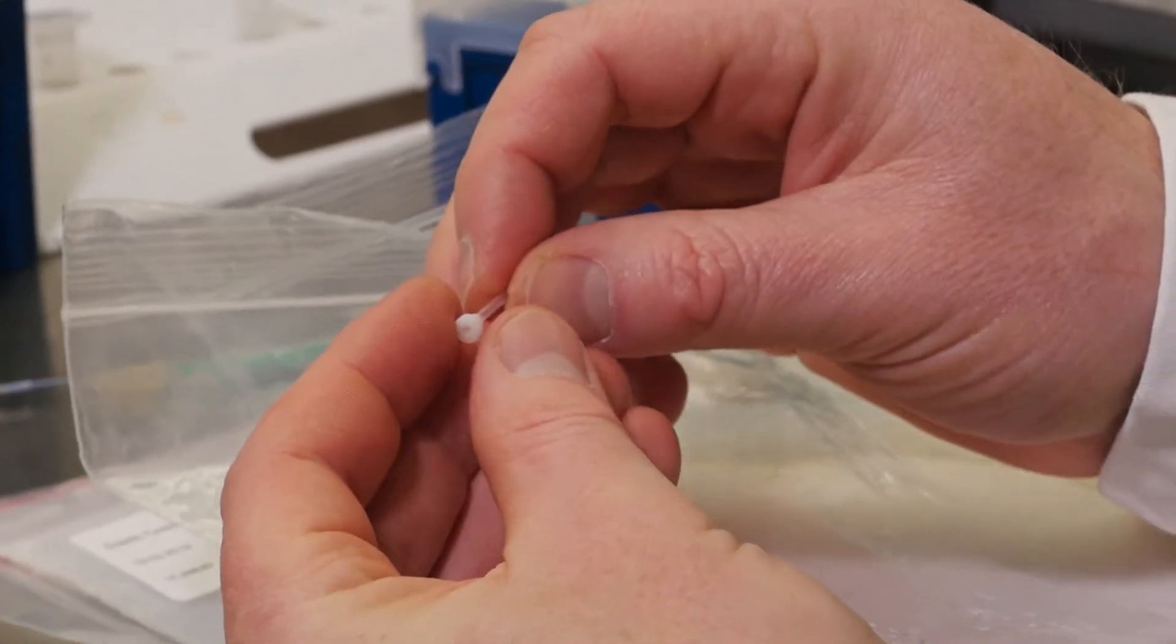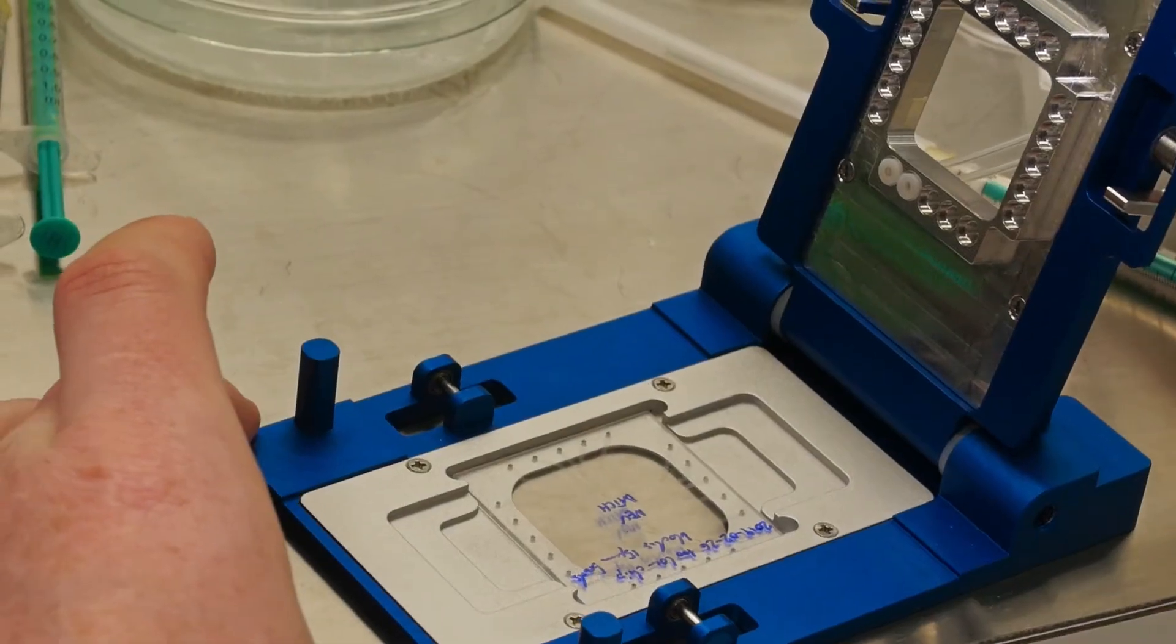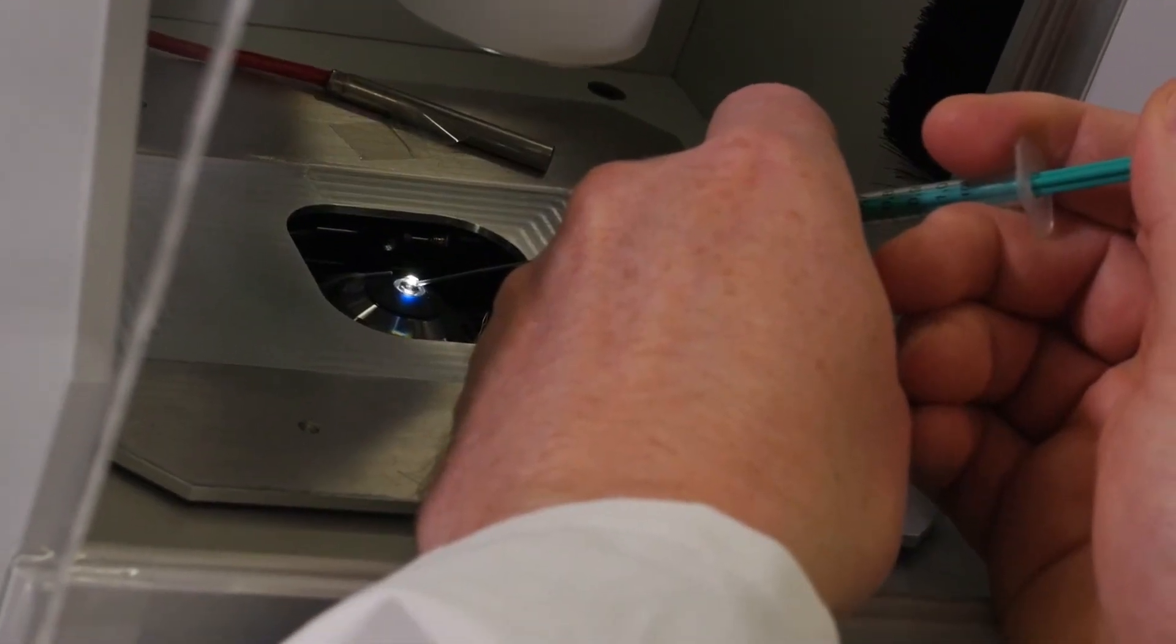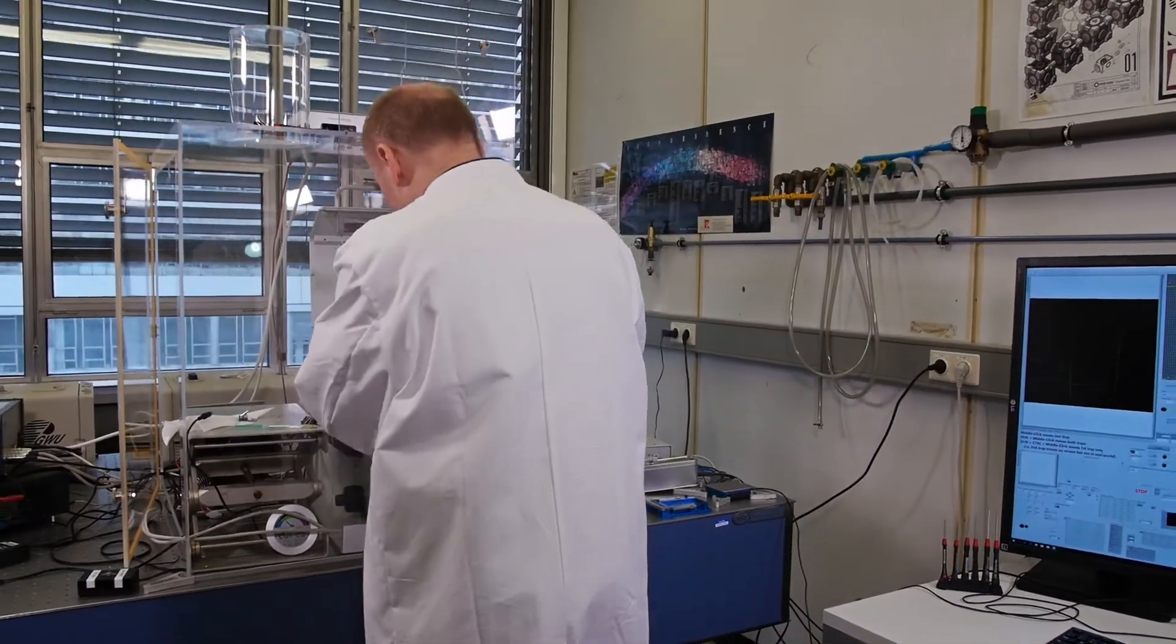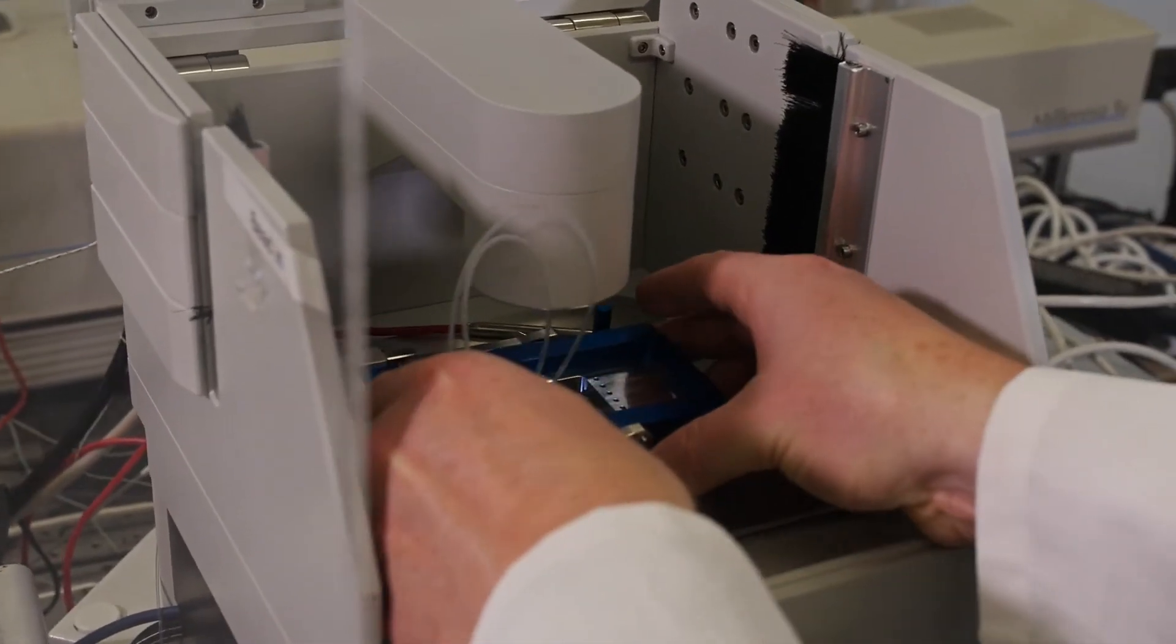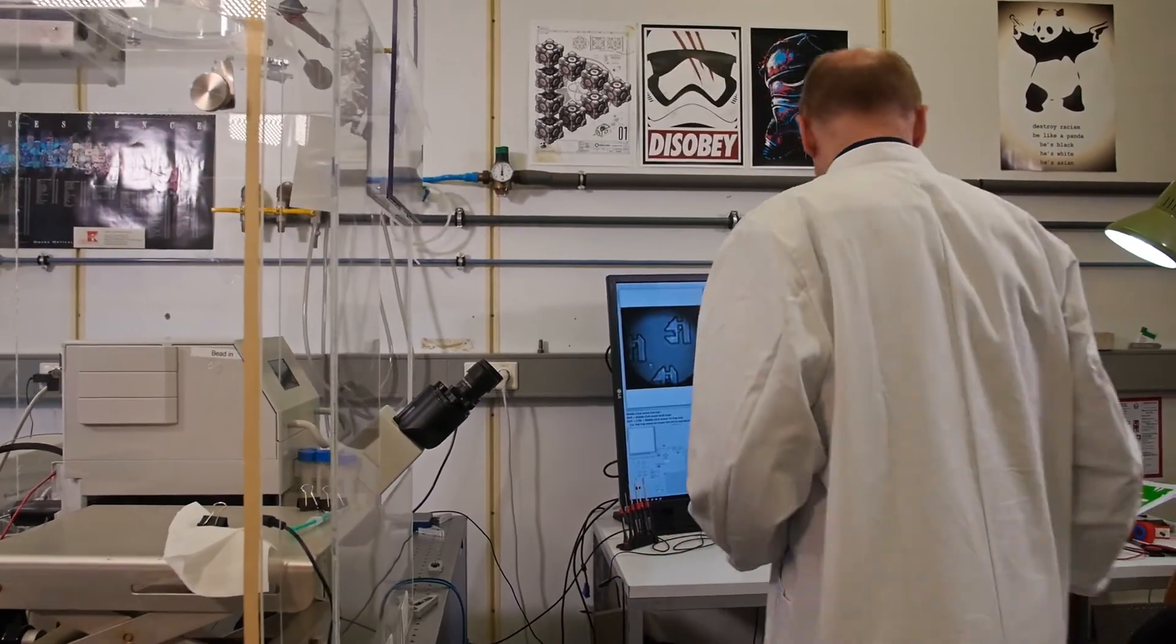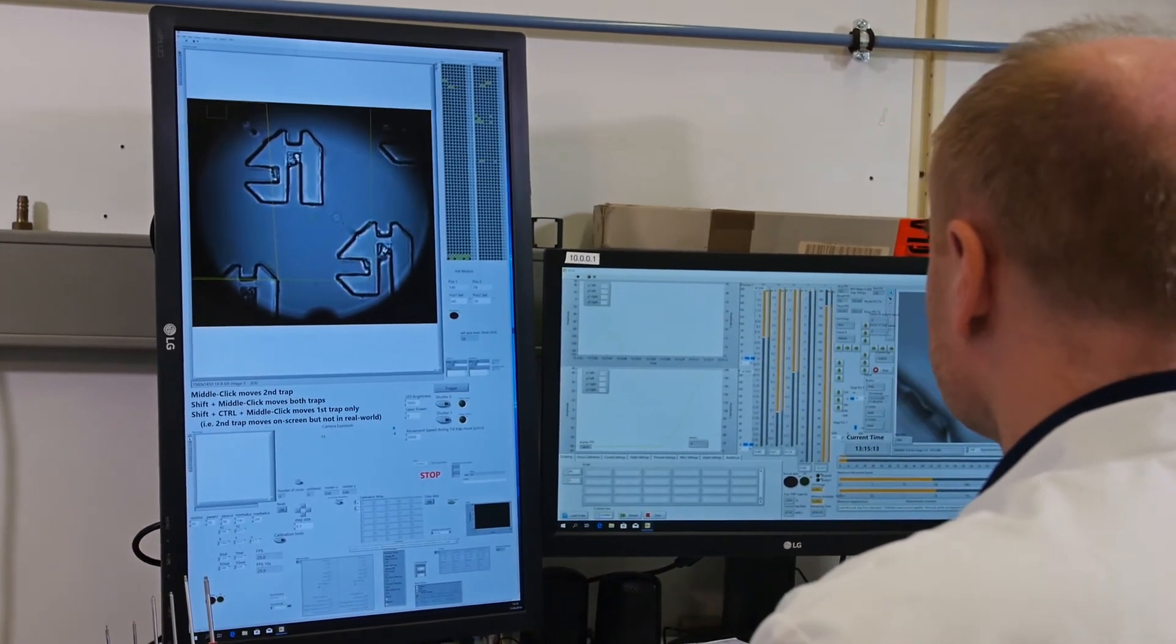The core element of the automated elasto-tweezers instrument is a dual optical tweezer with two independently controllable optical traps developed by IronOvation. For evaluation of the cell's elasticity properties, complexes are formed between one individual cell and two microbeads, the two microbeads being captured by the two optical traps. Pulling or pushing on the microbeads results in deformation of the cells and by quantifying the amount of cell deformation, its viscoelastic properties can be derived.